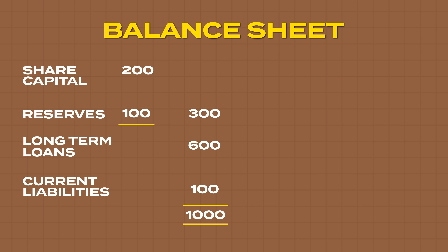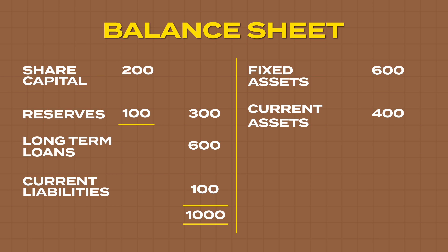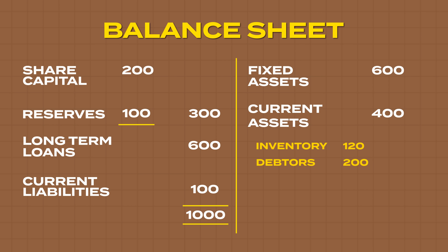Where did this money go? The right-hand side tells you 600 has been invested in fixed assets — the infrastructure. And 400 has gone into working capital. Three components of working capital are inventory, debtors, and bank balance. Now let's work out a few stability ratios.